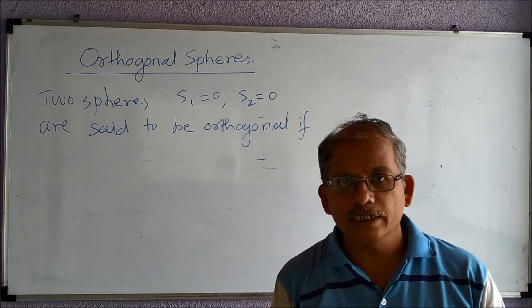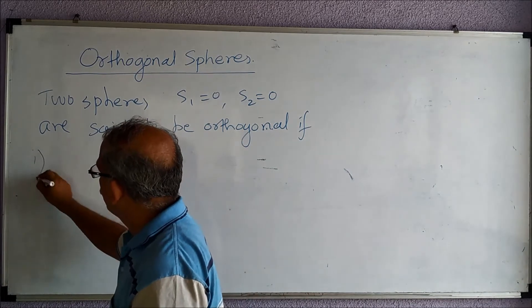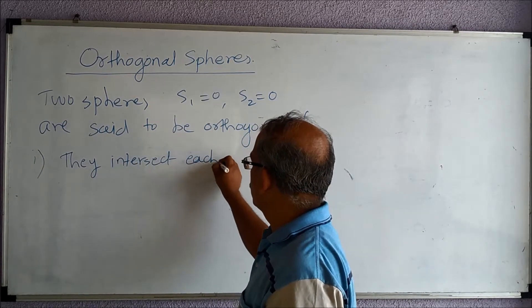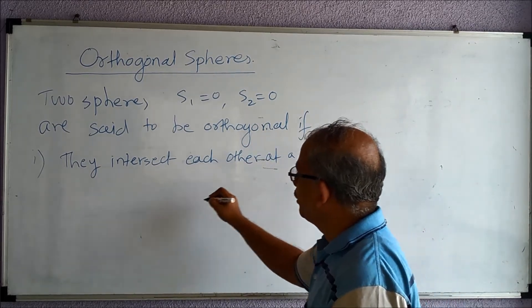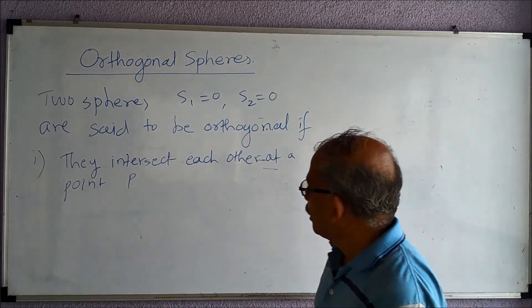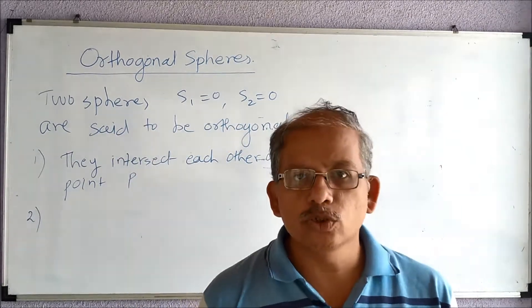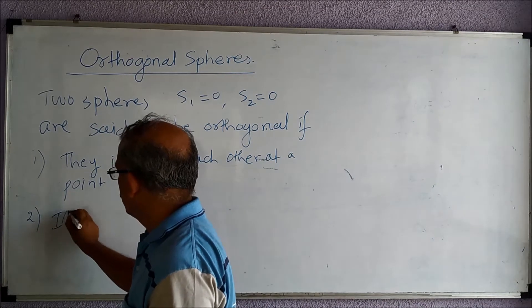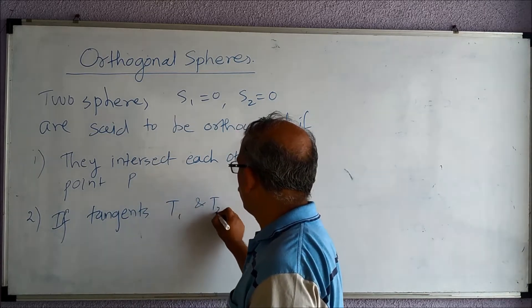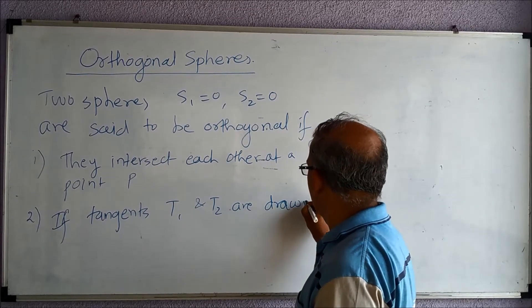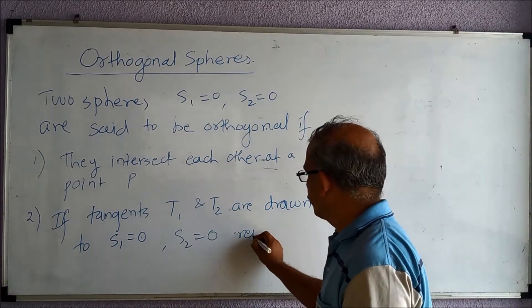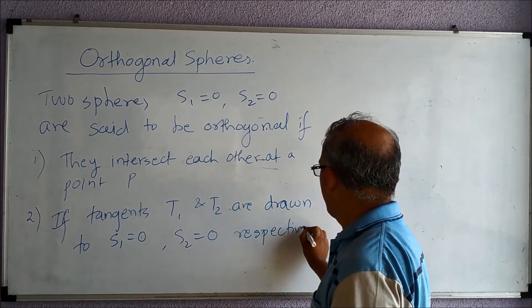If they intersect each other at a point, and if you draw the tangents to these two spheres at this point, tangents t1 and t2 are drawn to s1 = 0 and s2 = 0 respectively at point P.